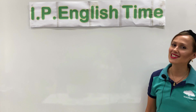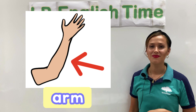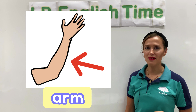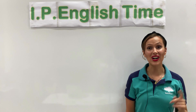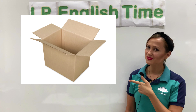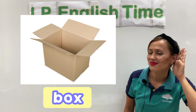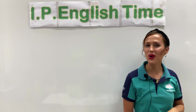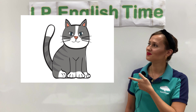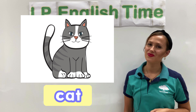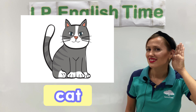Letter A is for arm. Can you repeat after me? Arm. Well done. Letter B is for box. Can you repeat? Box. Okay, our next word is with letter C. Letter C is for cats. Can you say cats? Well done.